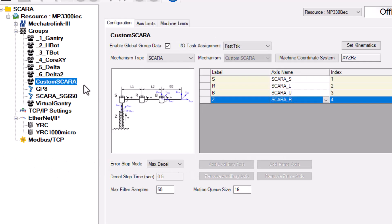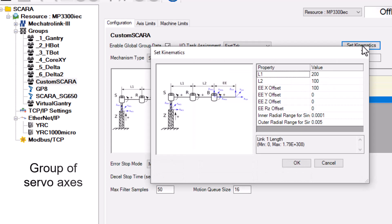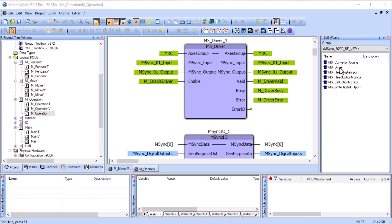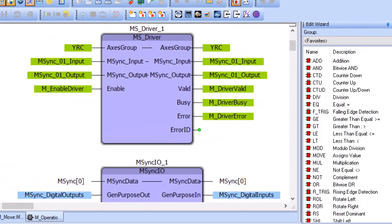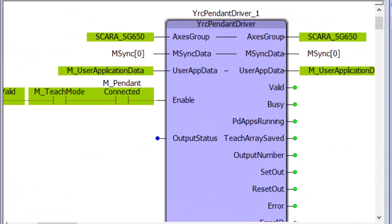On the other hand, a custom SCARA is configured as a group of individual servo axes, and the robot kinematics are handled internally. The MotoManSync library of function blocks, such as MSDriver, interface to the robot controller. YRCPendantDriver allows the robot pendant to save points to the machine controller.